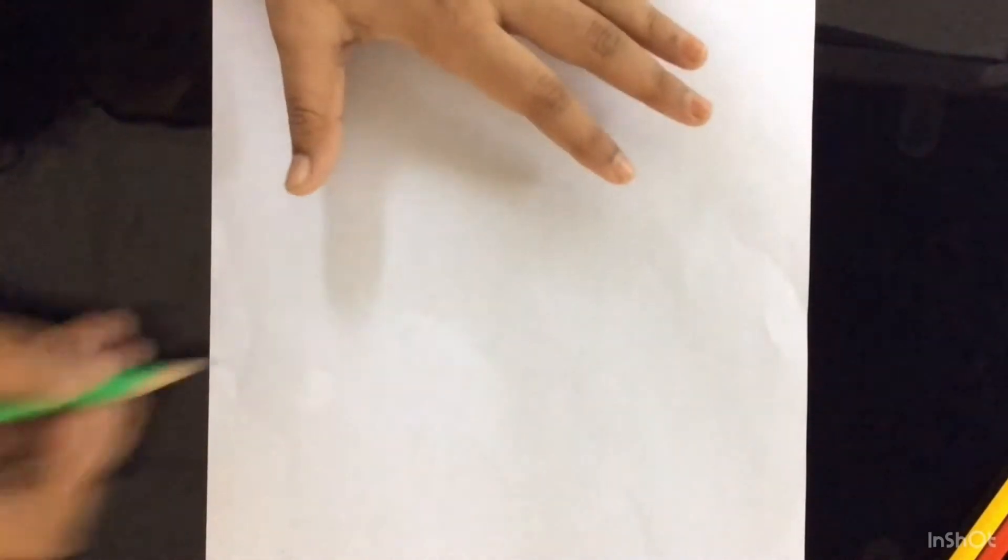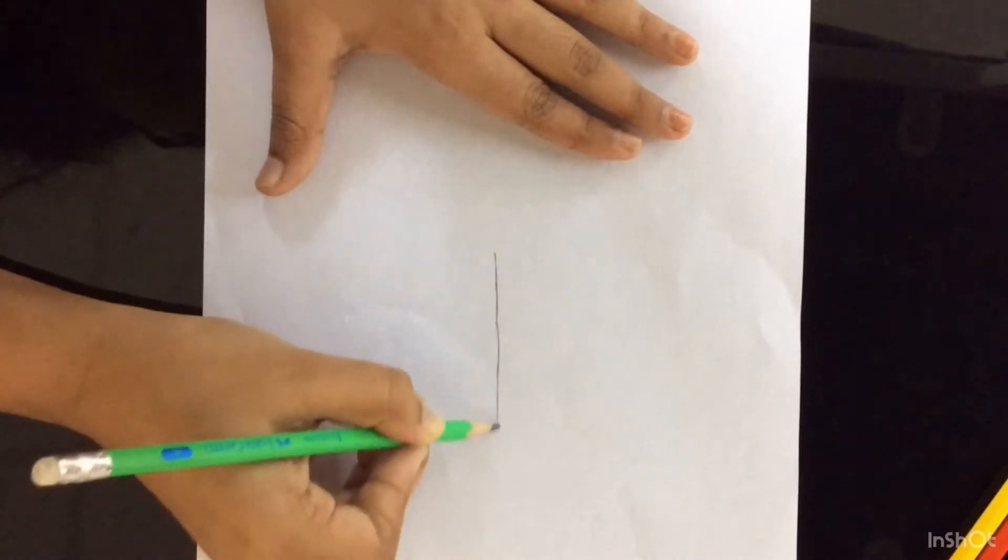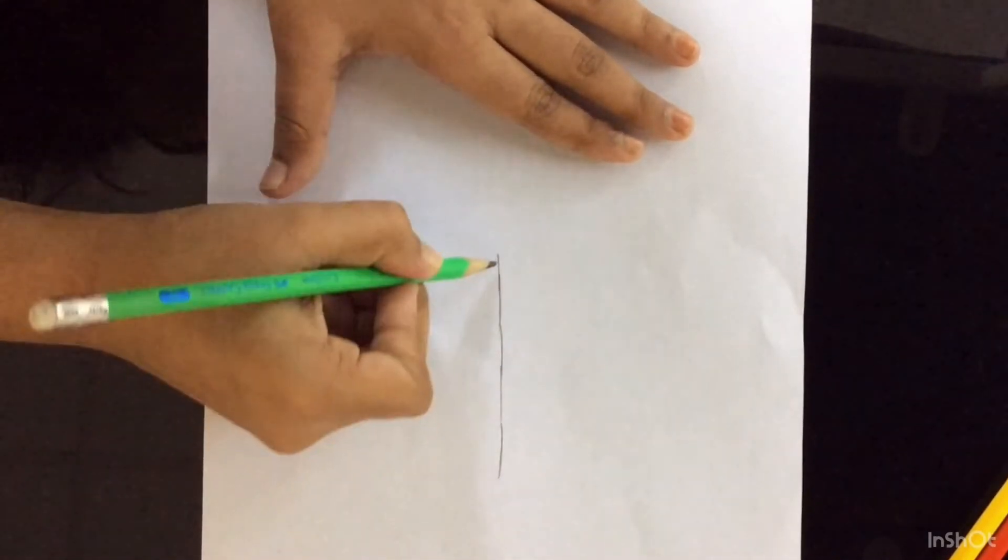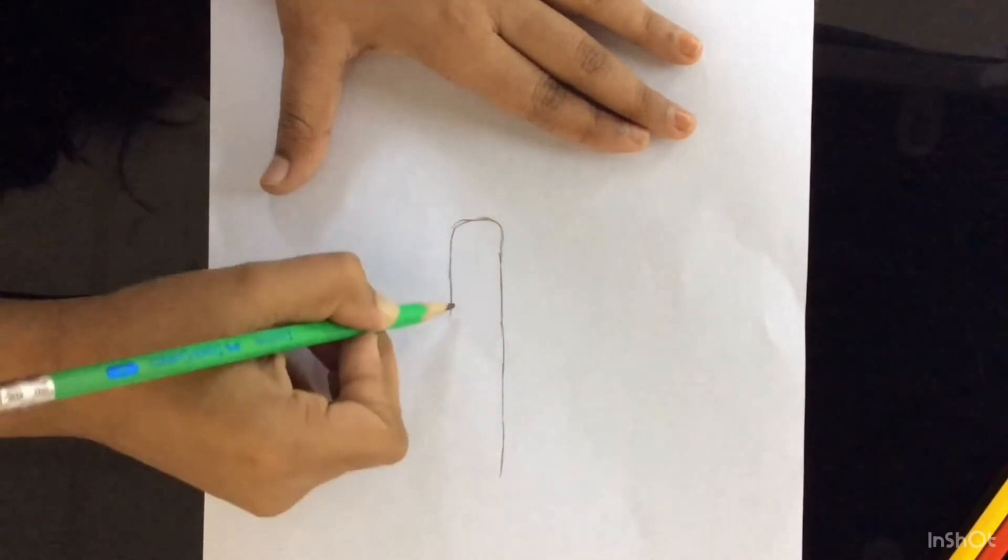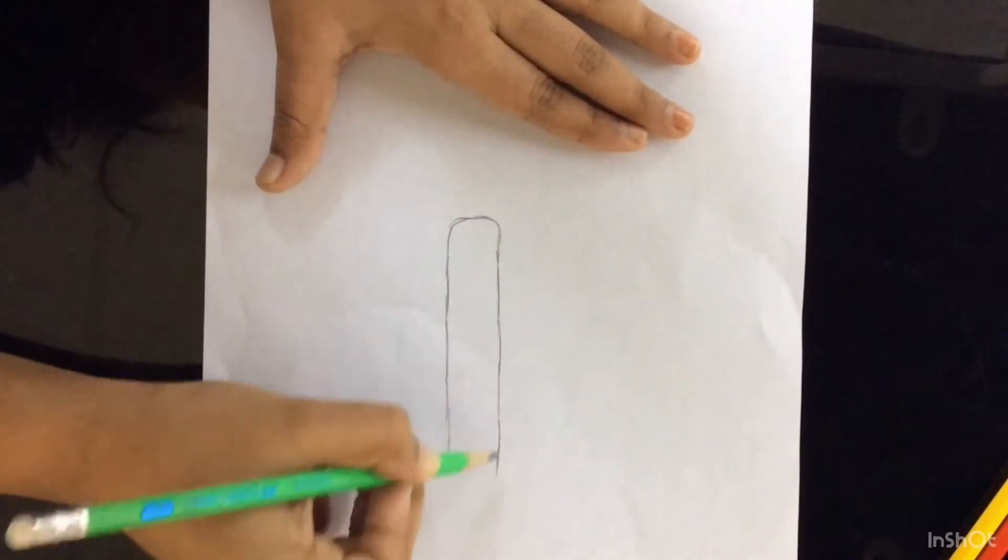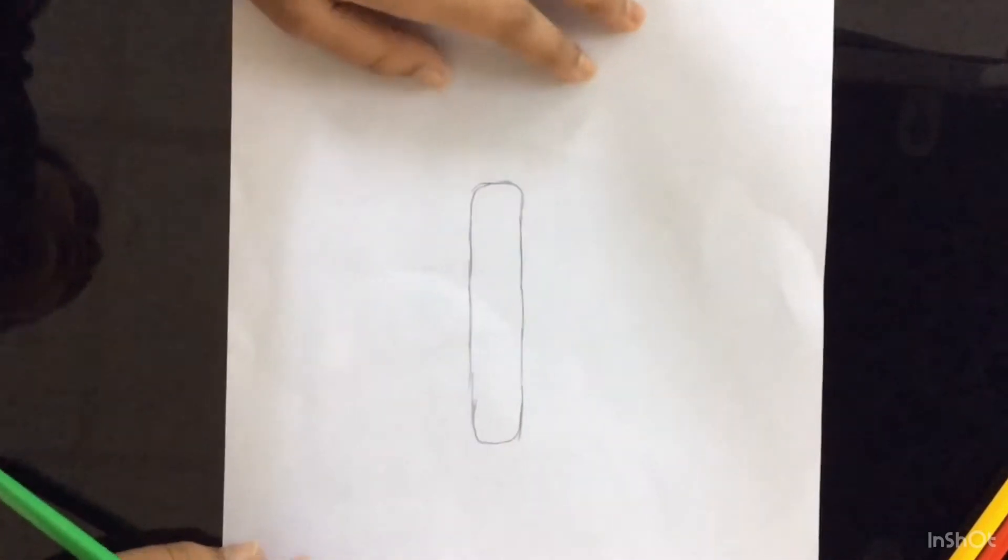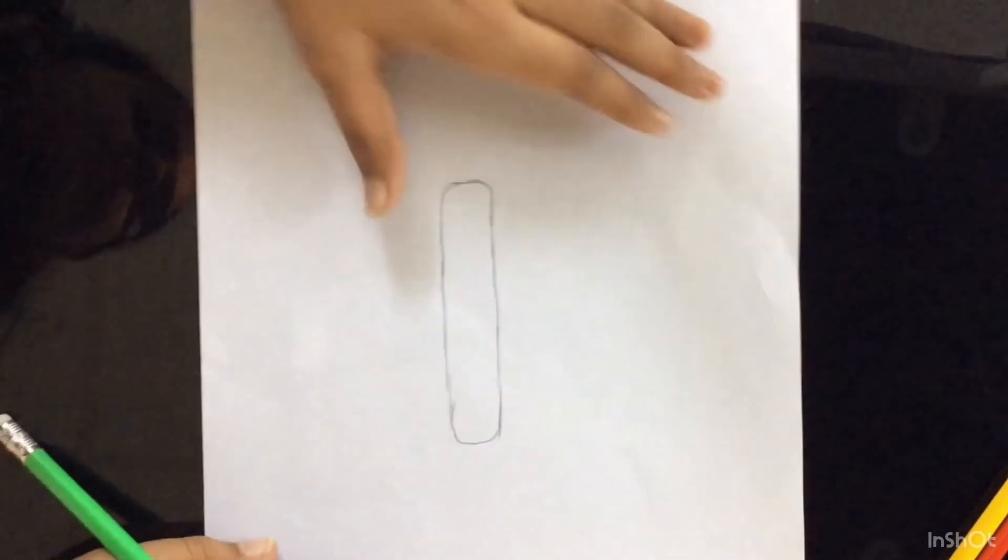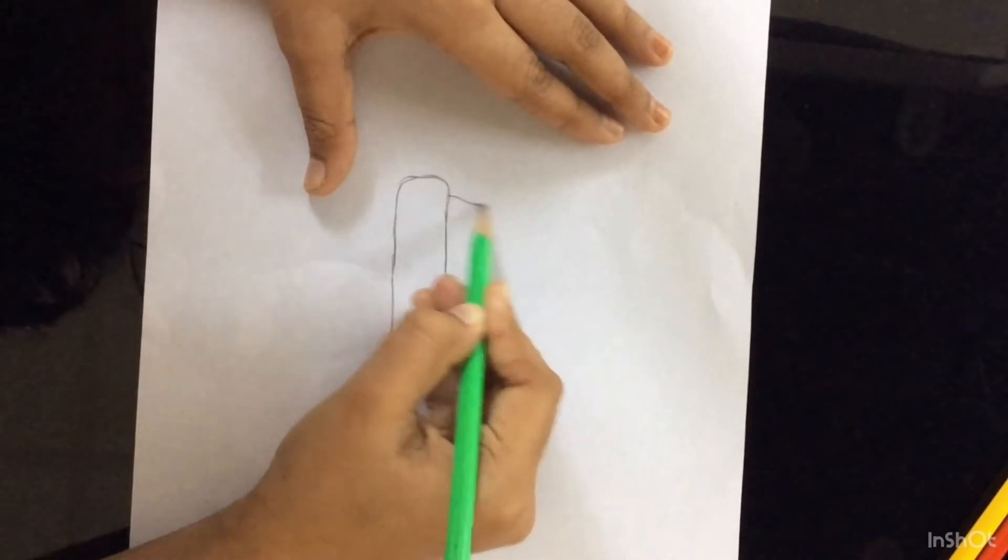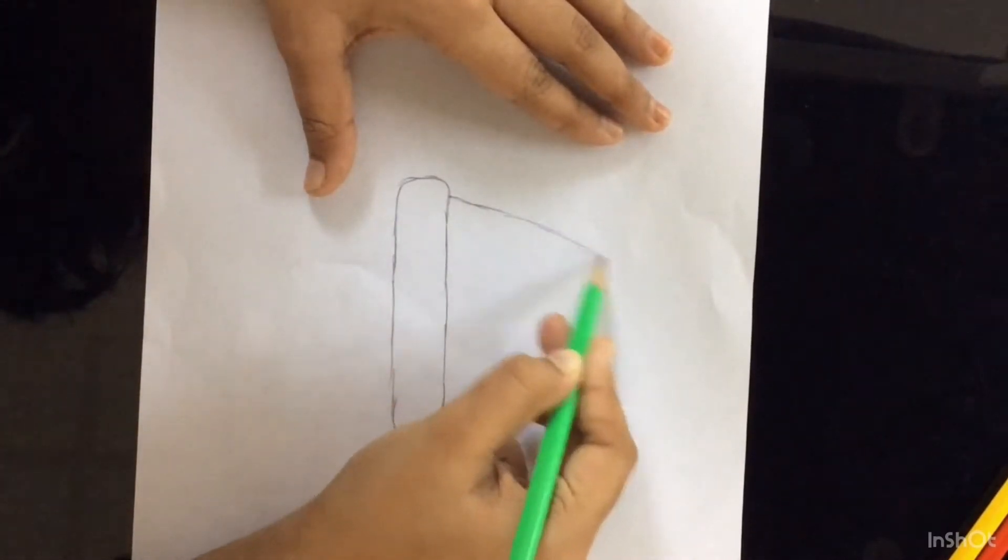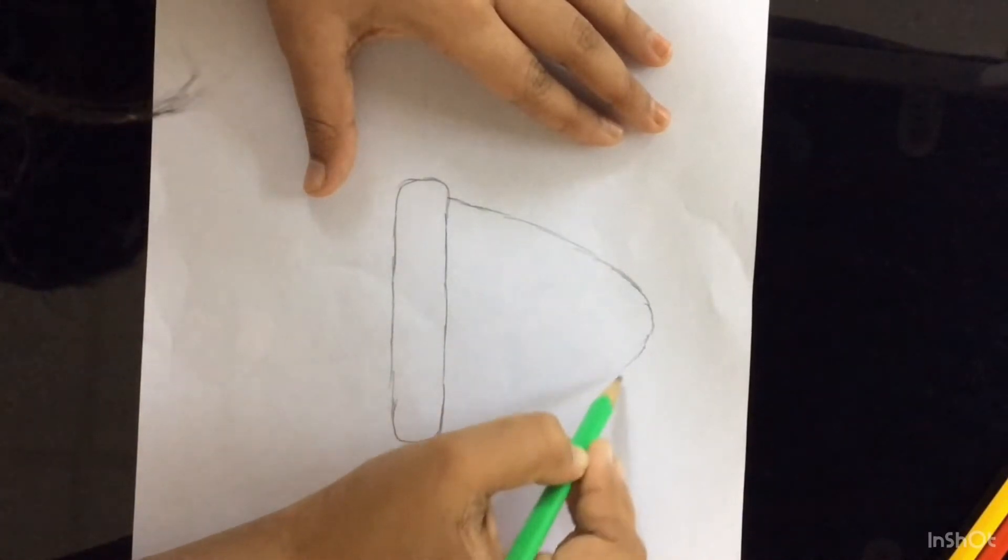First you need to do it like this. You need to draw a rectangle like this, then from here you can draw the above part.